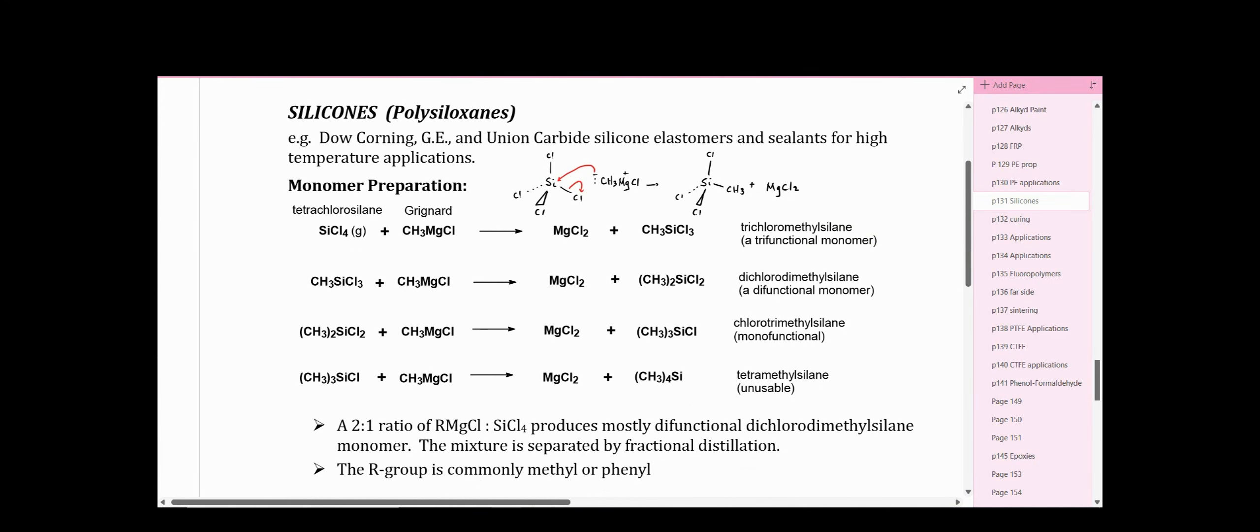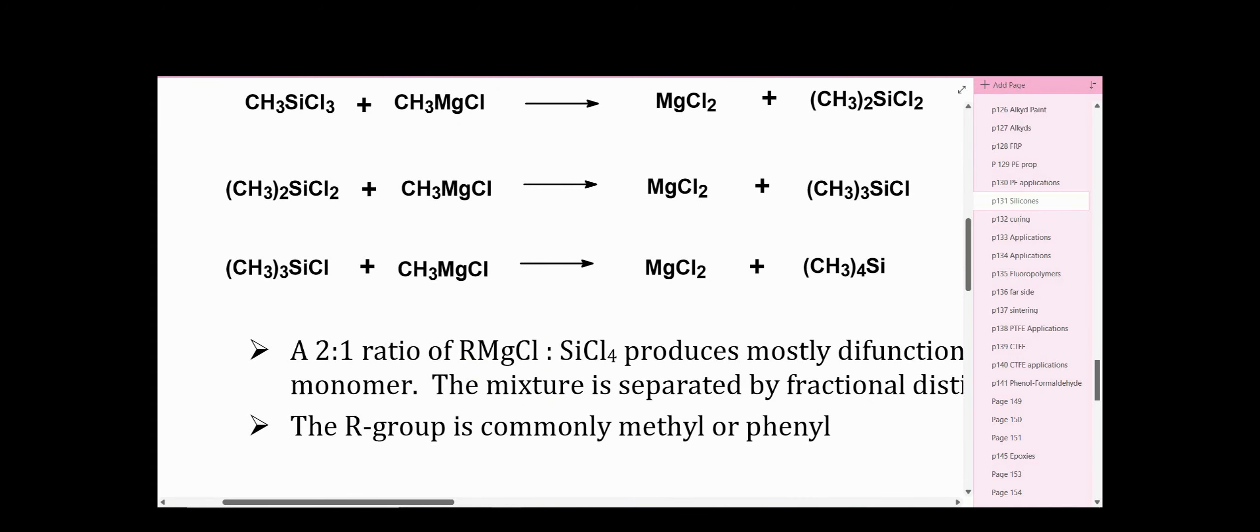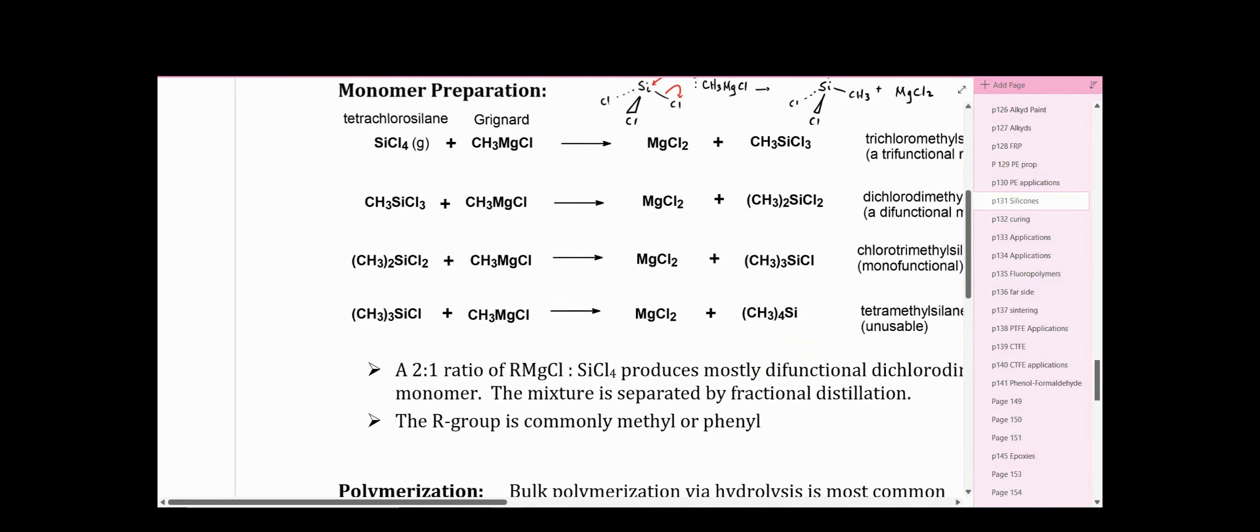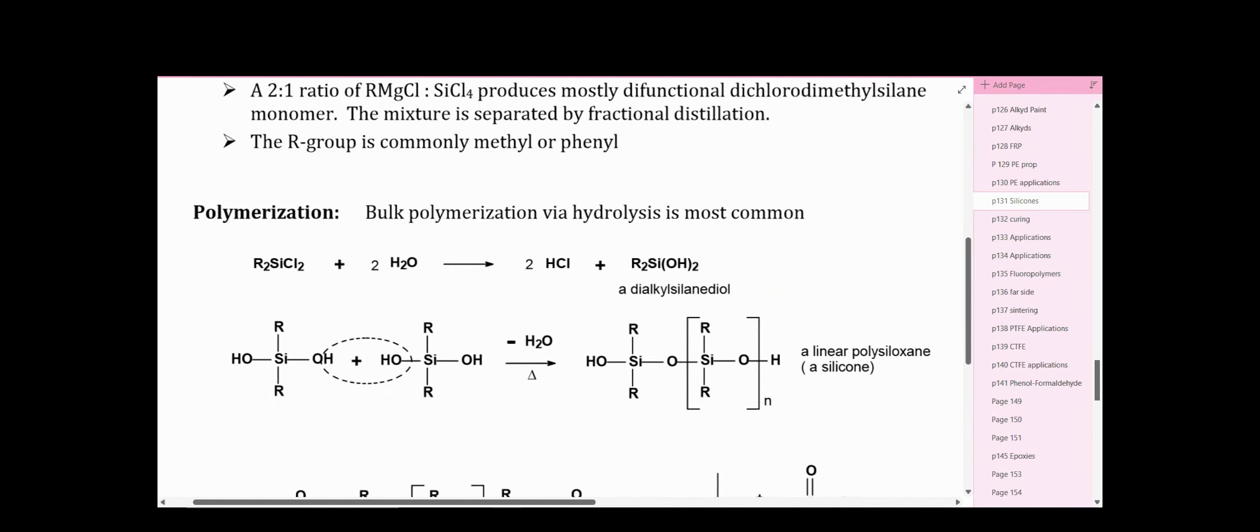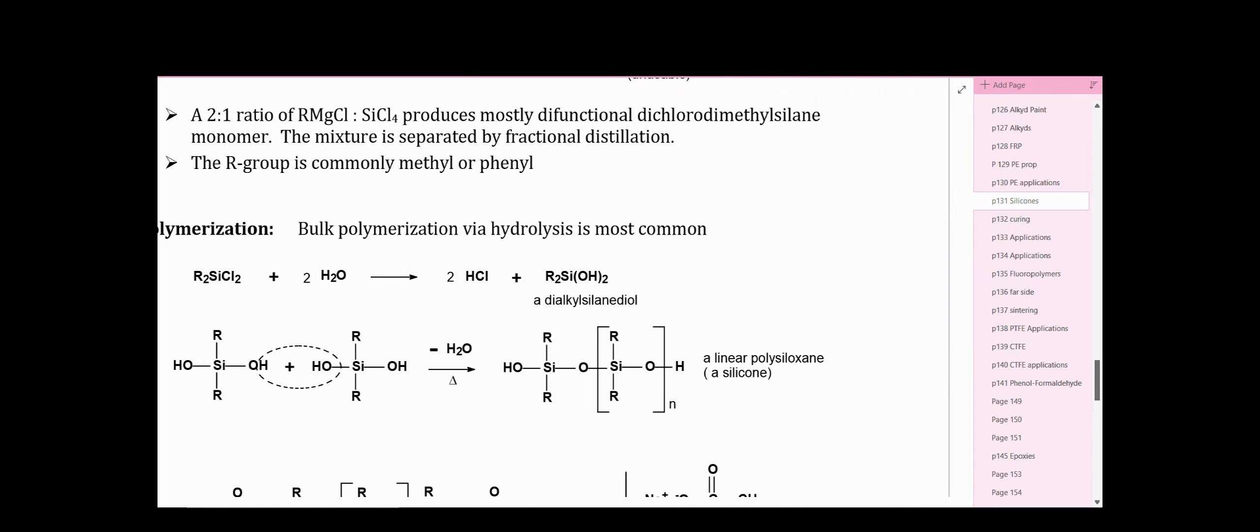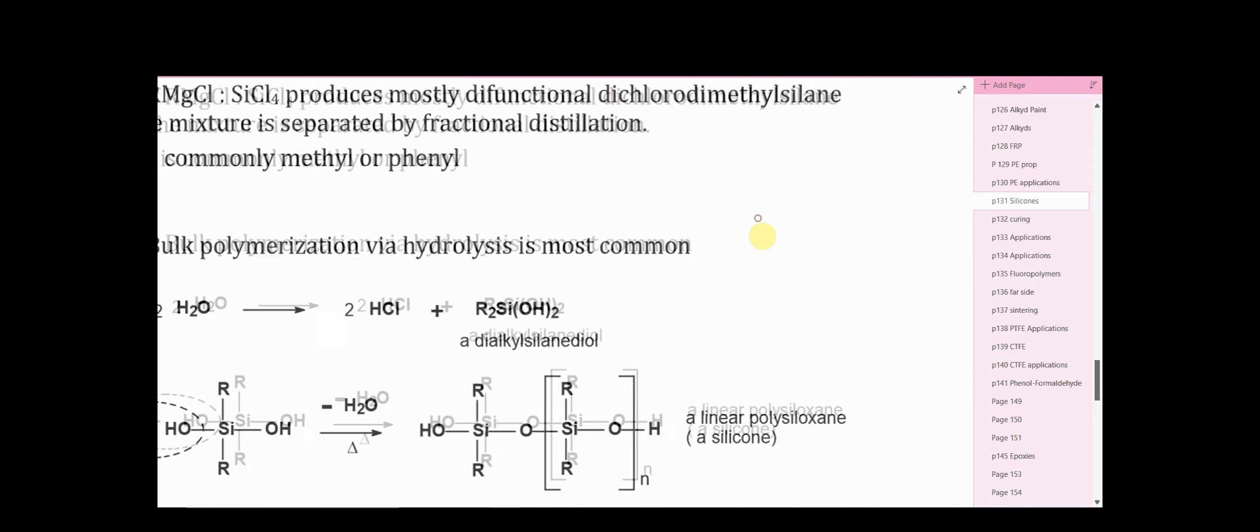Now we haven't actually got very far yet. We combine a 2 to 1 ratio of the Grignard with the tetrachlorosilane, we get mostly difunctional monomer. All right, so the polymerization - it's bulk polymerization and hydrolysis is the way it goes. Water molecules replace chlorides in the same way that the alkides did from the Grignard. Here I'll just show one example or one step here.